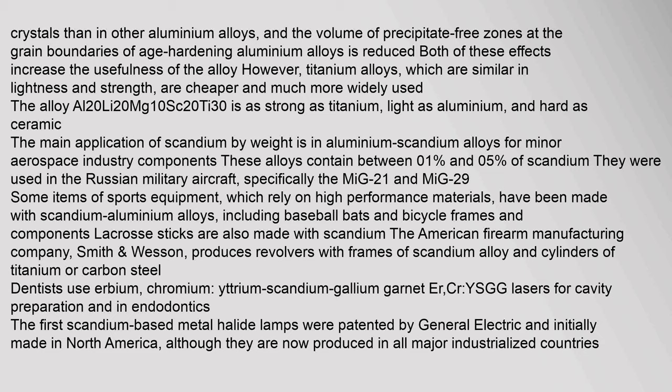The volume of precipitate-free zones at the grain boundaries of age-hardening aluminium alloys is reduced. Both of these effects increase the usefulness of the alloy. However, titanium alloys, which are similar in lightness and strength, are cheaper and much more widely used. The alloy Al20Li20Mg10Sc20Ti30 is as strong as titanium, as light as aluminium, and as hard as ceramic. The main application of scandium by weight is in aluminium-scandium alloys for minor aerospace components. These alloys contain between 0.1% and 0.5% of scandium. They were used in Russian military aircraft, specifically the MiG-21 and MiG-29. Some sports equipment has been made with scandium-aluminium alloys, including baseball bats, bicycle frames, and lacrosse sticks.